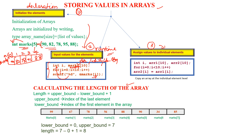When i is equal to 1, the value will be stored in marks[1]. During runtime you can store the data or elements in the array. The third method is assigning values to individual elements. For example, marks[1] can be directly assigned the value 50, and similarly marks[3] can be directly assigned the value 80. This is how you individually assign values.